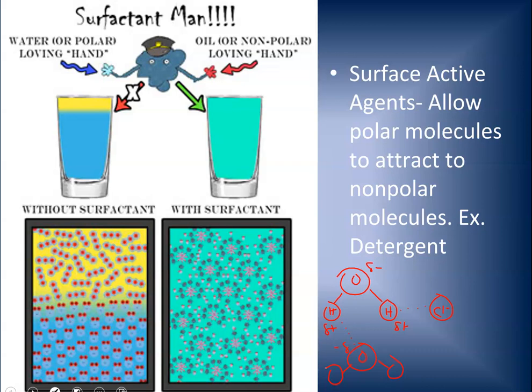So what a surfactant does — and remember, oil is nonpolar, so oil and water don't mix. You could shake them up all you wanted and they would still separate. A surfactant has one side that's nonpolar and one side that's polar within the same molecule. When you add a surfactant to something like oil and water, it allows the nonpolar and polar to mix — it sort of holds hands with both at the same time.